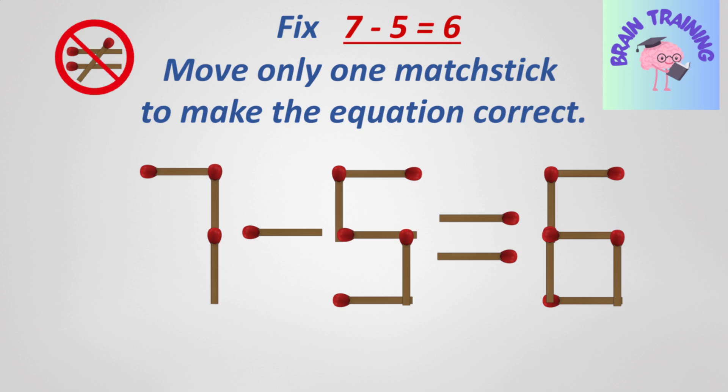The current equation is 7 minus 5 is equal to 6. Looks wrong, right? You will have 15 seconds to solve this puzzle. If you're ready, let's begin.